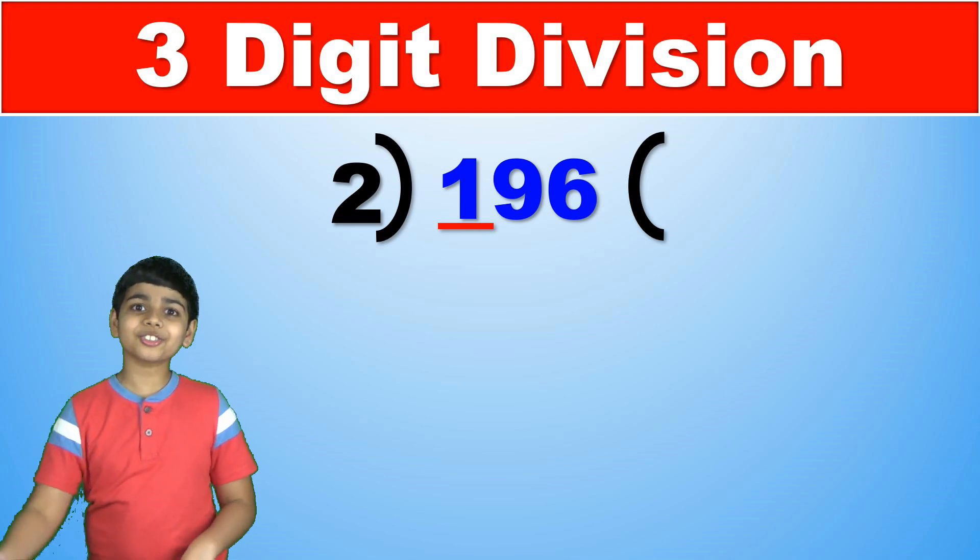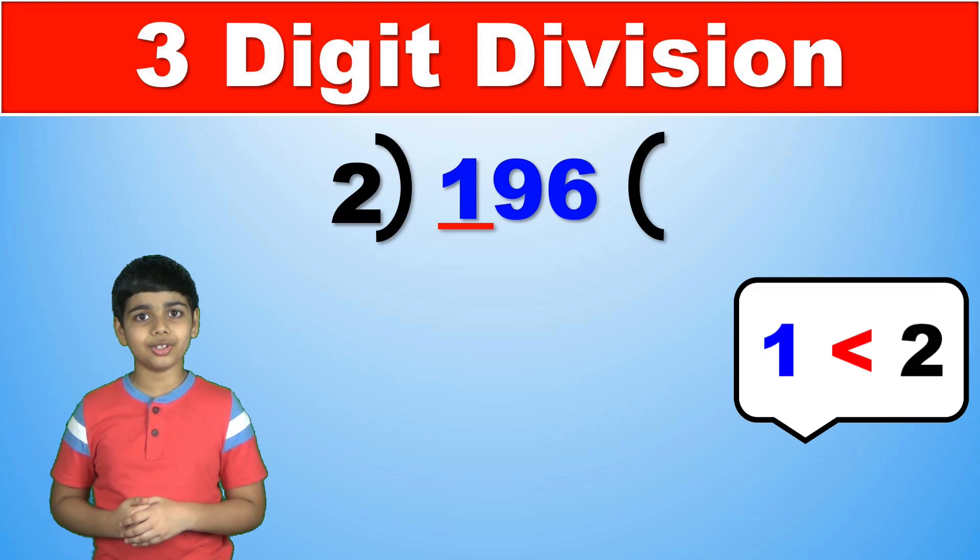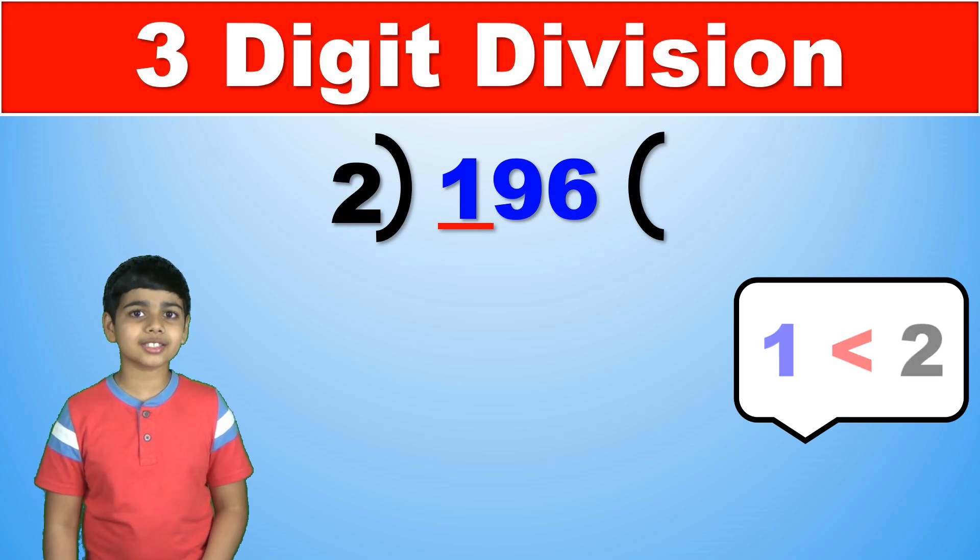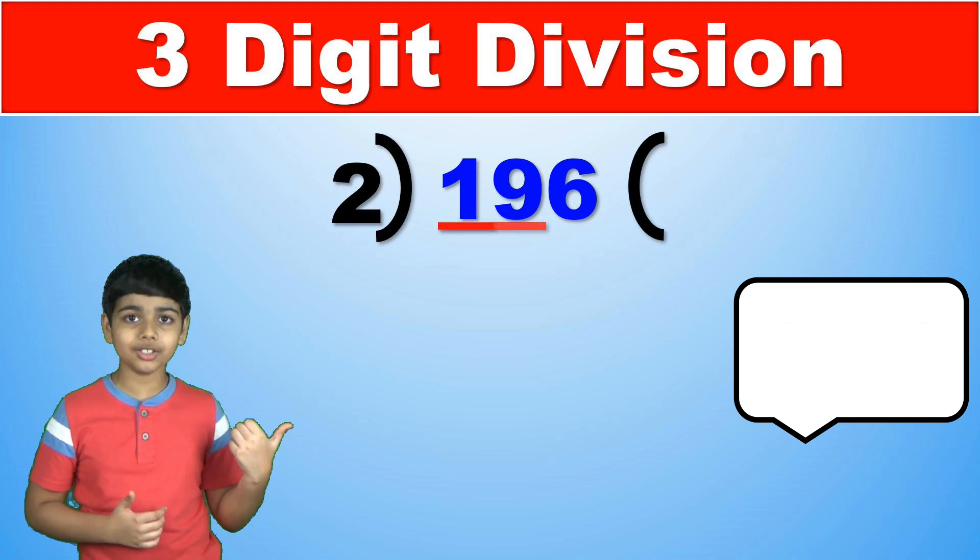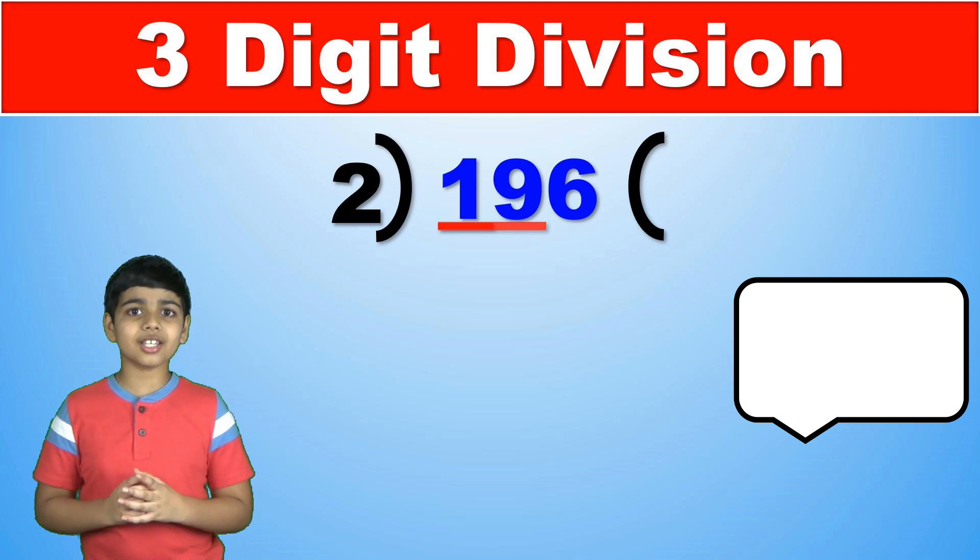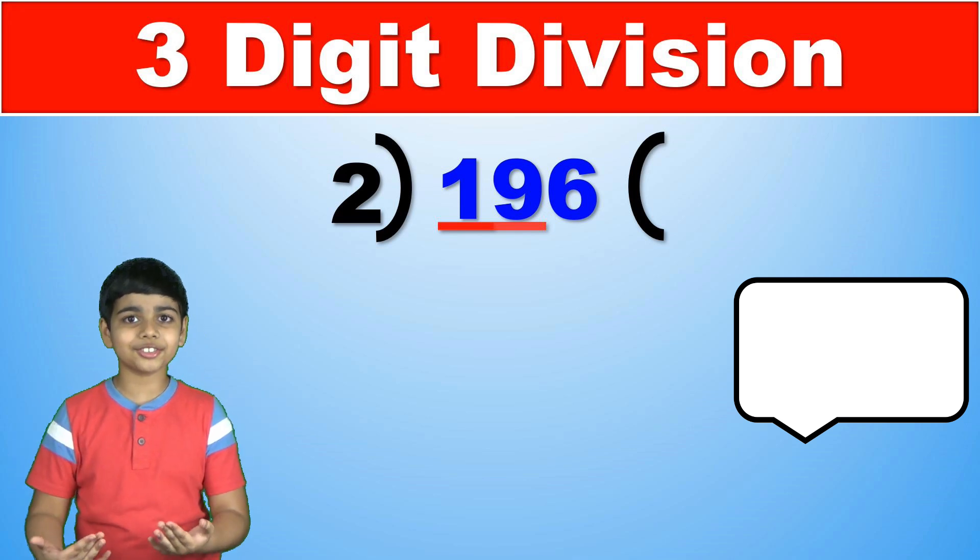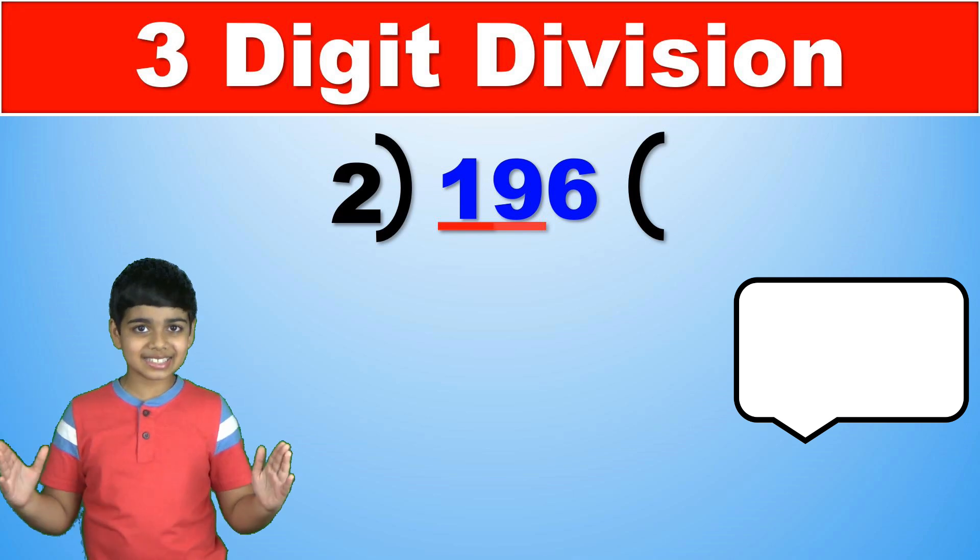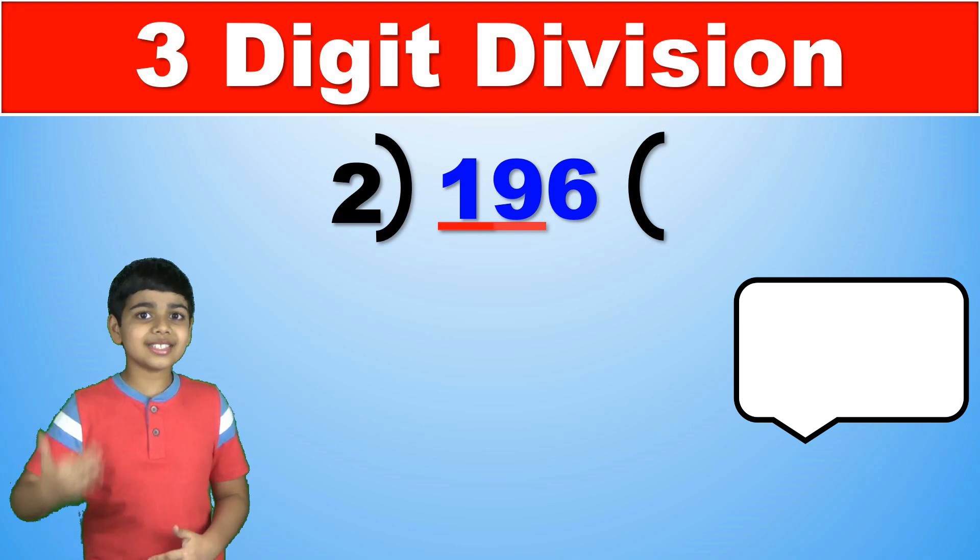Well 1 is actually lesser than 2 and that means we have to extend the line so that instead of 1 it crosses over to the next digit and becomes 19. Now is 19 greater than 2? Obviously yes.